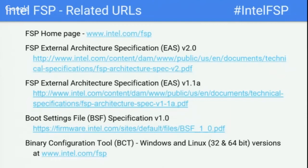Q: What about post codes in FSP? Post codes are captured in the integration guide, at least for Kaby Lake. They were not well-documented in Skylake and prior. Post codes have been standardized: the 16-bit value is split so you can identify which API you're in and what's happening at a high level. Within that, details may require the integration guide. The goal is to at least make it easy to determine whether a hang is inside FSP or in the bootloader. Post codes will continue to be enabled.